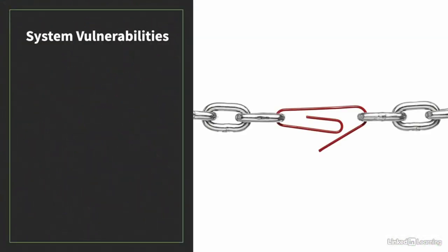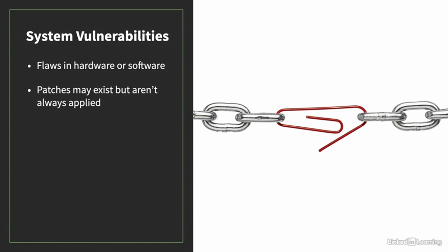While there are many types of malware, the infection methods are often similar. There are two main ways that systems become infected with malware. The first is system vulnerabilities — flaws in hardware or software that allow malware to get installed and function. Usually patches exist to fix these vulnerabilities, but users and organizations don't always apply these patches in a timely manner, leaving themselves exposed. In 2020, a Microsoft vulnerability first identified back in 2012 was still included in the FBI's list of the top 10 most exploited security flaws.